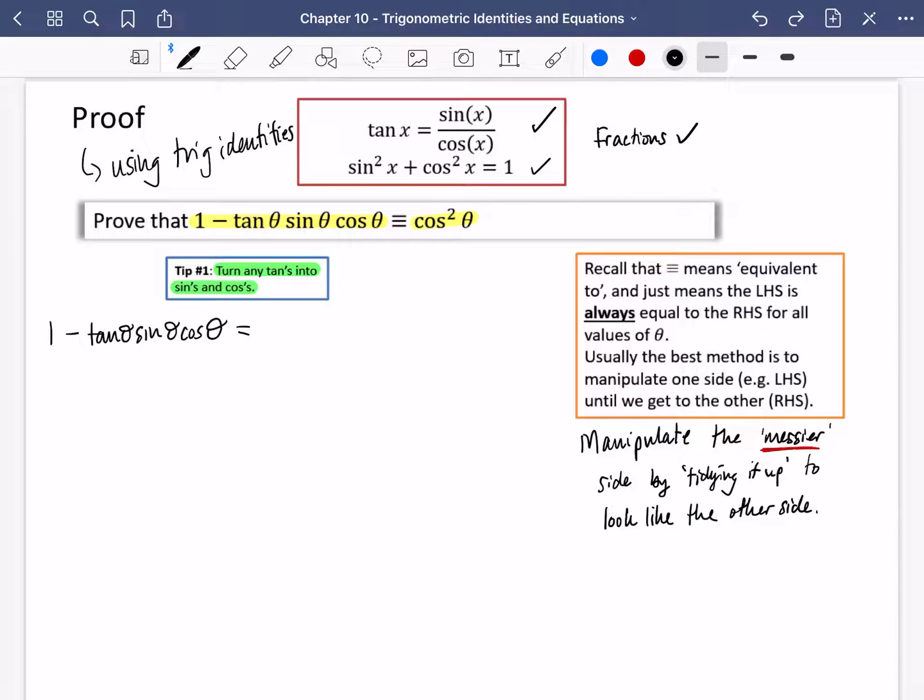Okay, let's go. So first tip, we're going to change the tan θ into a sin θ over cos θ that we know from up here. So that's 1 minus sin θ over cos θ multiplied by sin θ multiplied by cos θ. Now I mentioned this, you need good skills with fractions. You should clearly be able to see here you are multiplying by cos θ and dividing by cos θ, so they cancel each other out.